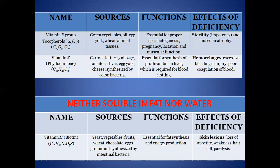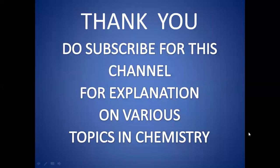Apart from fat-soluble and water-soluble vitamins, there is one vitamin that is neither fat-soluble nor water-soluble, and that is vitamin H, which we call biotin. Its sources include vegetables, fruits, wheat, chocolate, eggs, and groundnuts. Its function is that it is essential for fat synthesis and energy production. Its deficiency causes loss of appetite, weakness, and hair fall. So that is how we can understand what vitamins are, their importance, their sources, their functions, and what happens if there is a deficiency. Thank you everyone — do subscribe to this channel for explanations on various topics in chemistry.